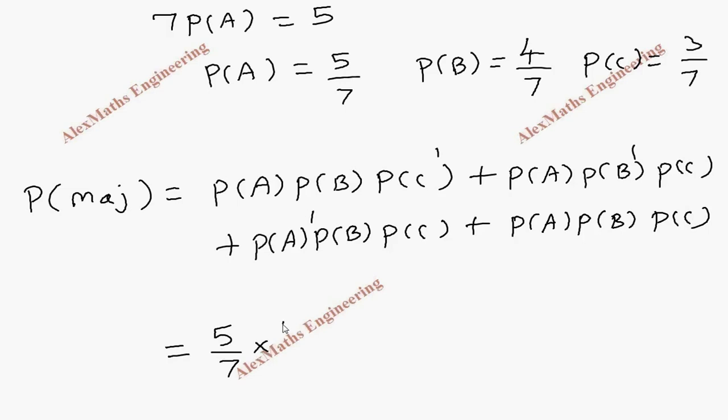For the first one, it is 5 by 7 times 4 by 7 times P(C') which is 1 minus P(C), which is 4 by 7. Then P(A), 5 by 7 times P(B'), 3 by 7, times P(C), 3 by 7.